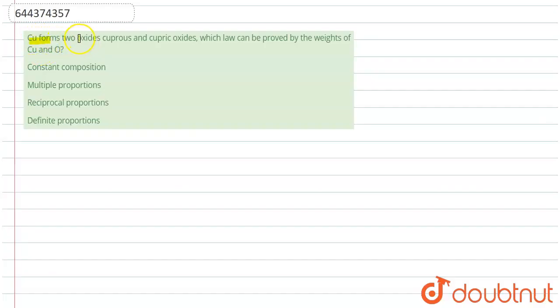...forms two oxides: cuprous and cupric. Which law can be proved by the weight of copper and oxygen? Okay, so here the equation will be 2Cu + O2 → 2CuO and 4Cu + O2 → 2Cu2O.